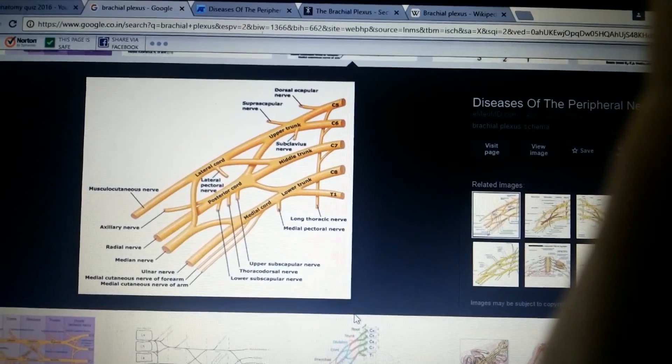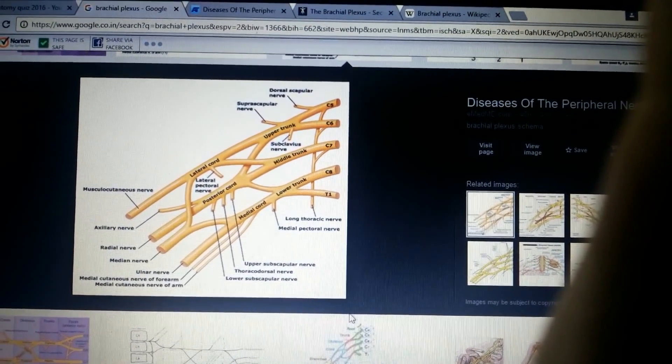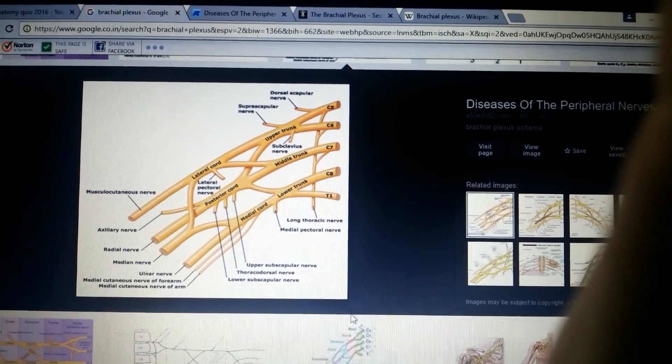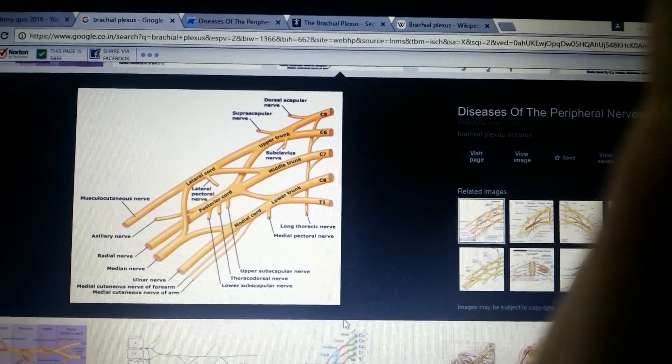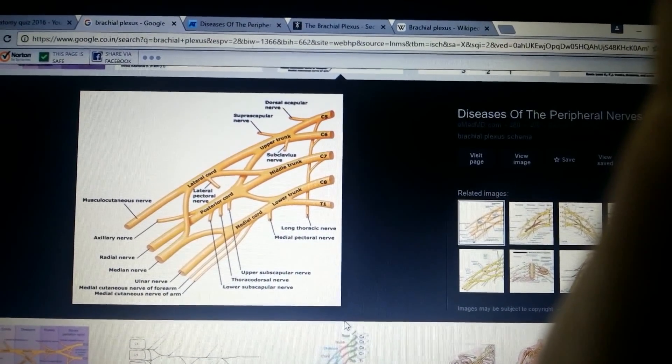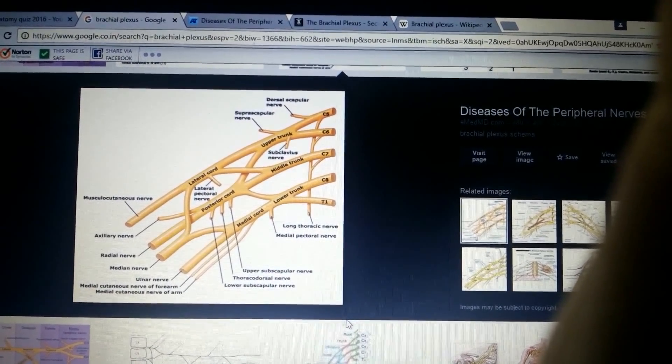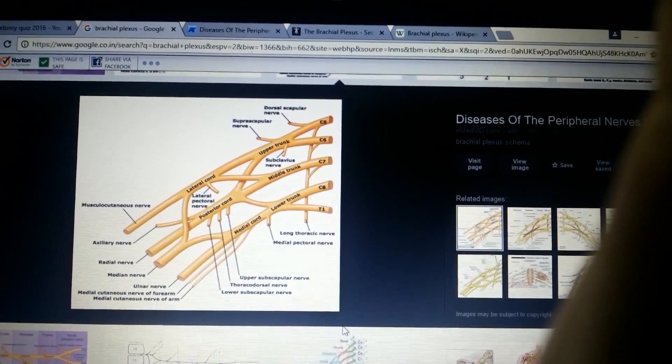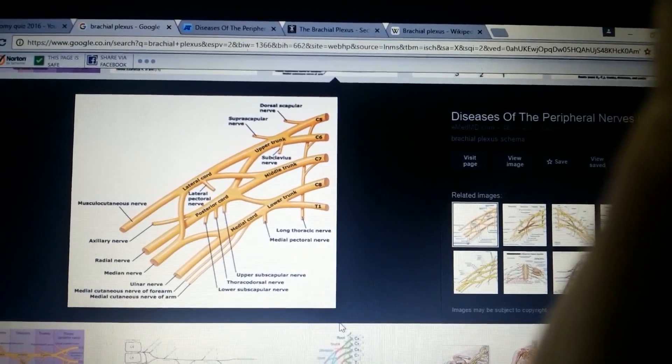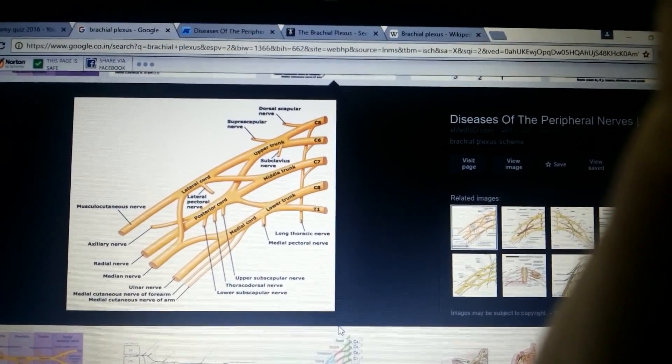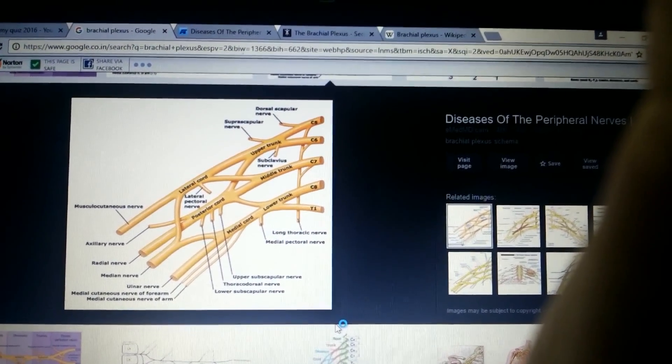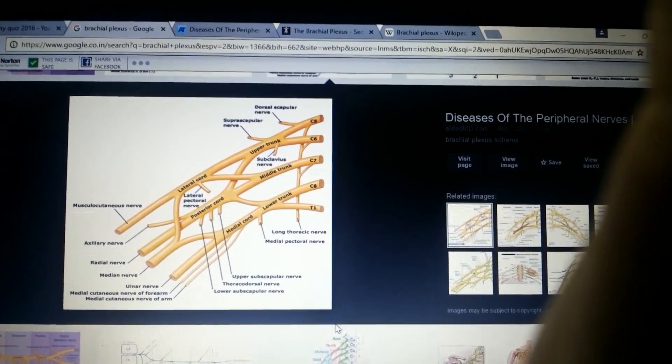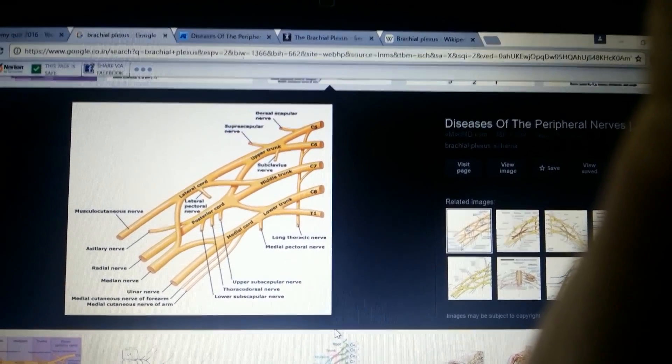Median parts of lateral and medial cord combine to form the median nerve. The lateral cord gives branches to lateral pectoral nerve, musculocutaneous nerve, and median nerve. For the posterior cord, the mnemonic is ULTRA: U is upper subscapular nerve, L is lower subscapular nerve, T is thoracodorsal nerve, R is radial nerve, A is axillary nerve.